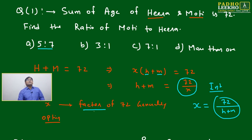Looking at option 7:5, the sum is also 12, which is a factor. For 3:1, the sum is 4, and 72/4 = 18, so it's divisible and works. More than one choice is valid, so we can mark option D (more than one).